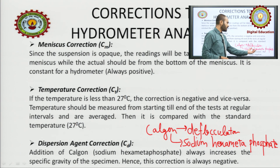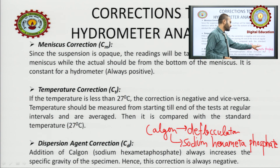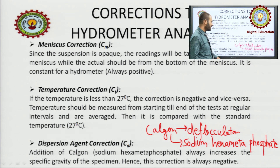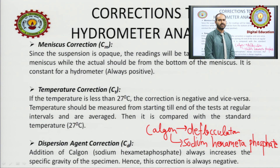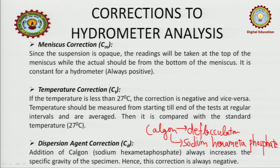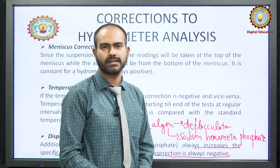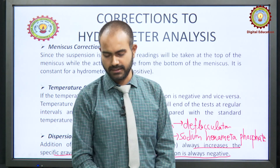Obviously, when we add this chemical into the water, even though its purpose is deflocculation, it will increase the specific gravity and density of the water. Due to this increase in specific gravity, the dispersing agent correction will always be negative, because we have to reduce the specific gravity back. So these were the three corrections considered in hydrometer analysis: meniscus correction (Cm), temperature correction (Ct), and dispersing agent correction (Cd).